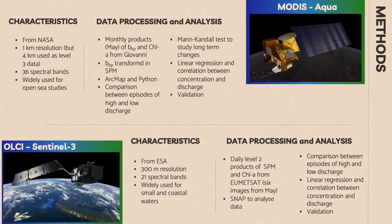My methods were based on two different sensors. MODIS is a sensor from NASA on board the Aqua satellite. It has one kilometer resolution, but the data I used were at four kilometer resolution because they were time and space binned. This satellite has been widely used for open sea studies. I downloaded backscattering coefficient and chlorophyll A data, transformed the backscattering coefficient into SPM using equations from the literature, and used ArcMap and Python to extract data, perform statistical analysis, and validation.